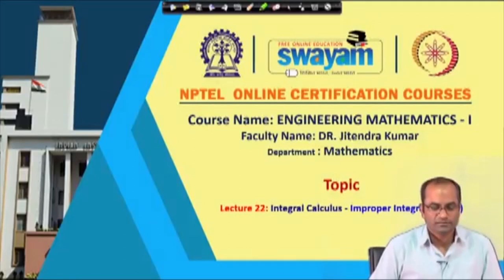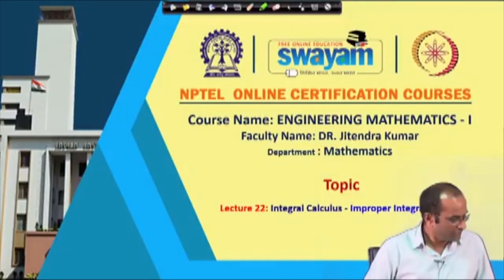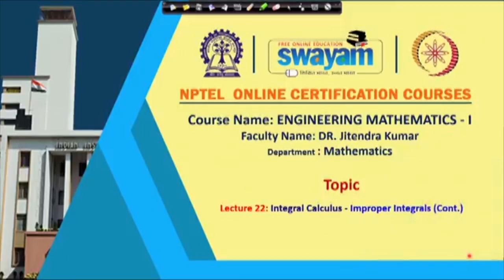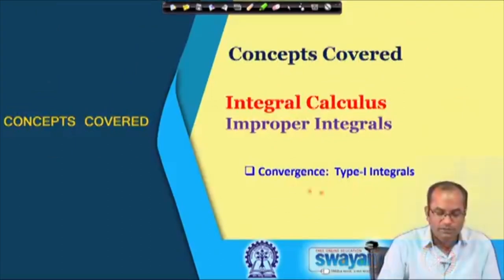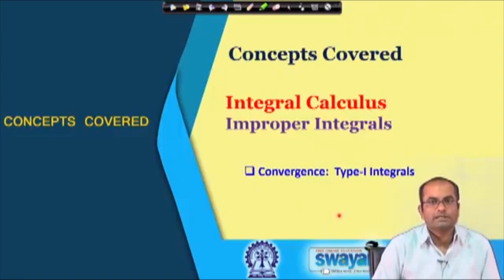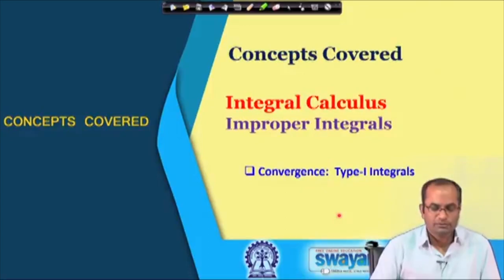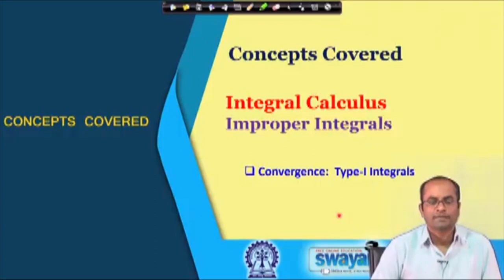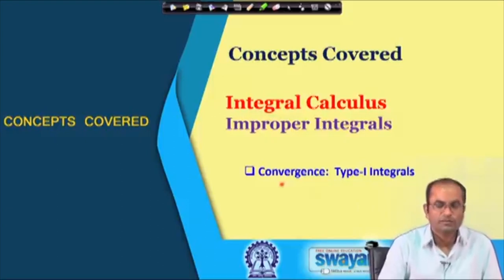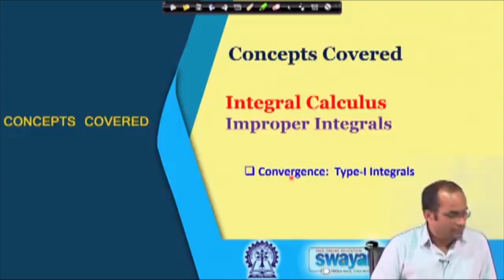Welcome back to the lectures on Engineering Mathematics I. This is lecture number 22 and we will continue our discussion on integral calculus, in particular improper integrals of type 1. Today we will be talking about the convergence of type 1 integrals. In the last lecture we saw how to evaluate those integrals, and based on the evaluation we could conclude whether the integral converges or diverges. Today we will discuss some tests based on which we can conclude convergence or divergence without evaluating the integral.